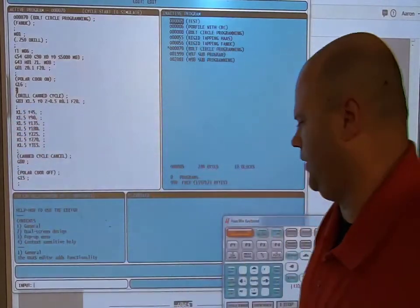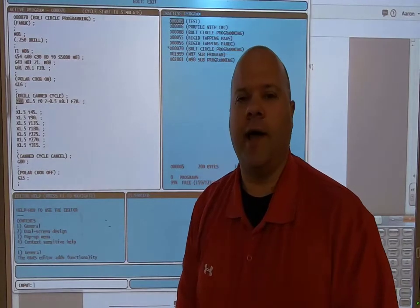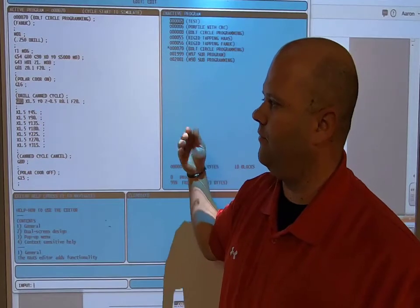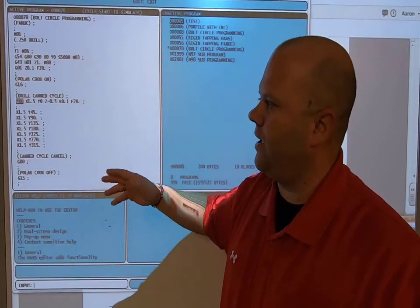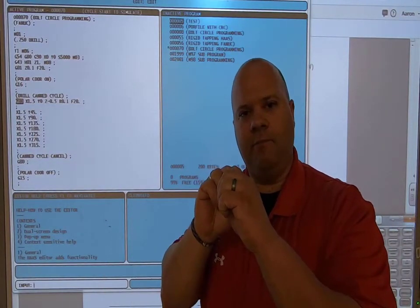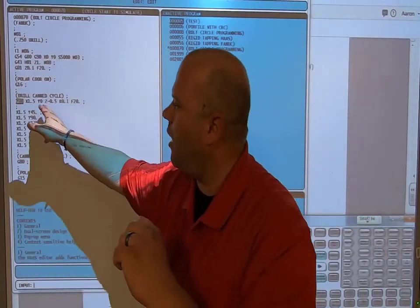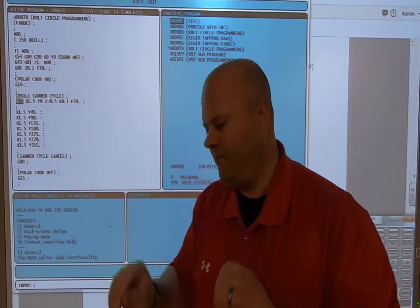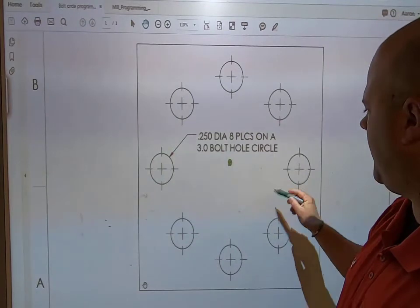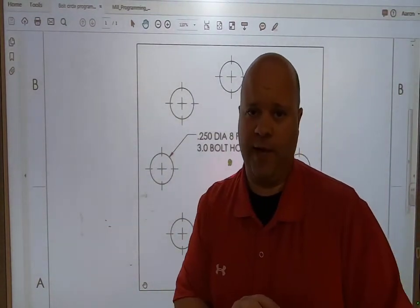Then G83 will turn on my drill canned cycle, same canned cycle. It's going to go X 1.5 and then Y zero. So 1.5 is my distance from center of my bolt hole circle to the center of the drilled hole. But my Y, if you'll notice, is zero. So what I did was I went from here, I drilled right there. I went right to three o'clock. I can do that on the Fanuc style.